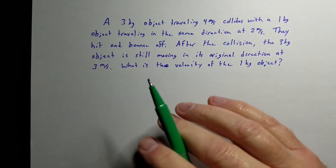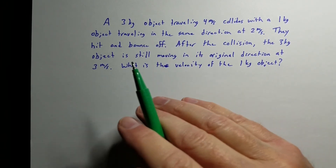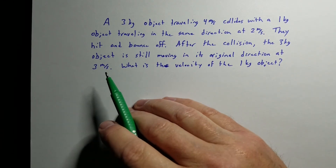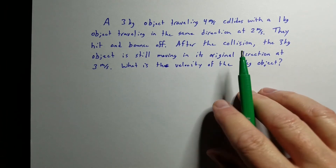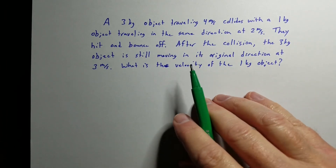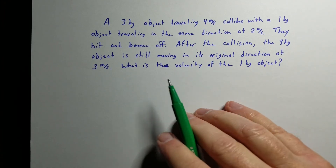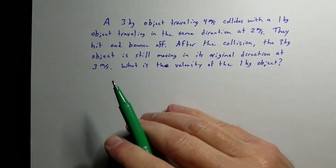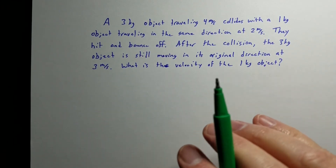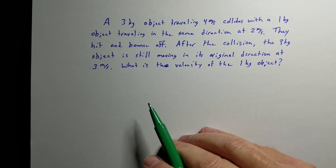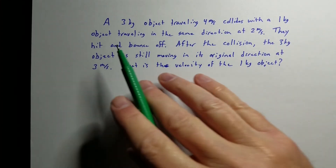This next one should be a perfectly elastic collision. What that means is the total kinetic energy of the two objects before the collision equals the total kinetic energy after the collision. We're not going to do that KE calculation here — we're just going to solve it using conservation of momentum — but you can check it later and see that the kinetic energy is conserved, which is the definition of a perfectly elastic collision.